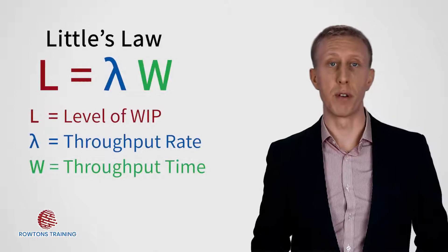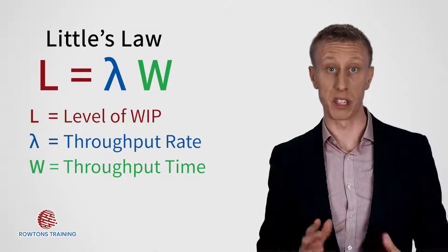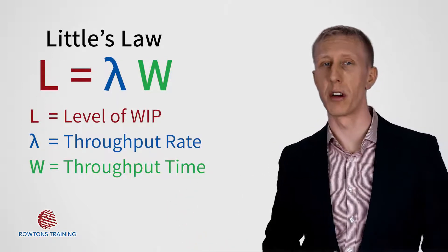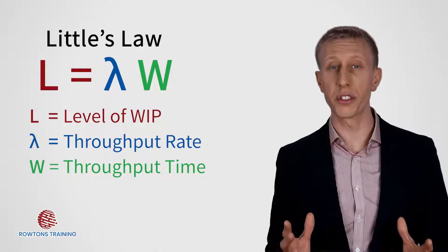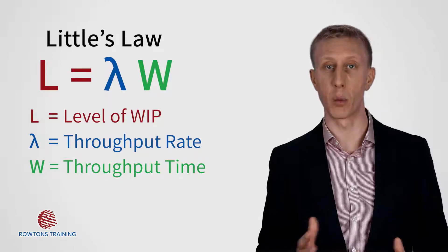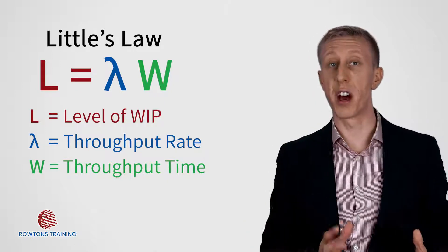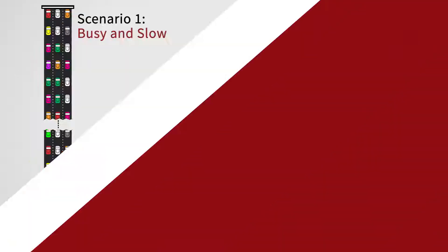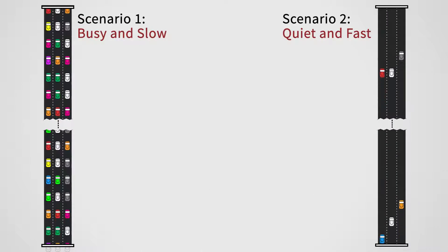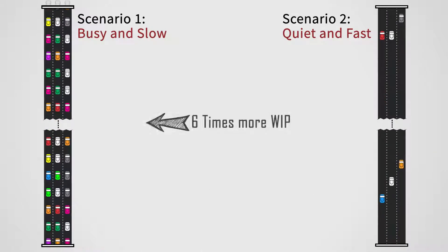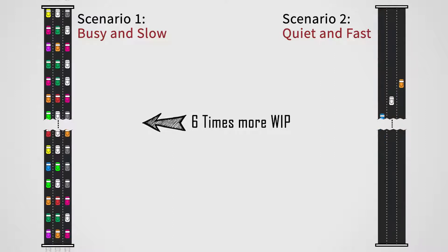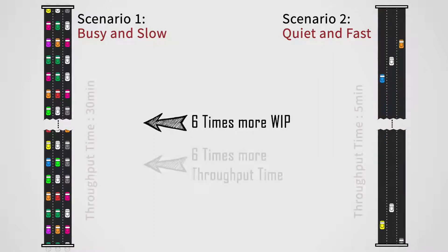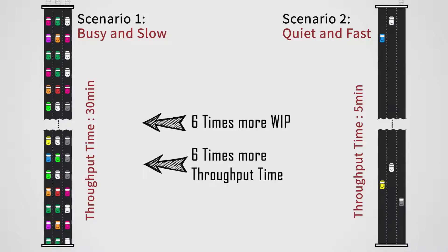If we keep the throughput rates the same, as was the case in our two toll road scenarios, we can see a direct relationship between the quantity of work in progress, the WIP, and the throughput time, or the lead time. On our toll road, when they were going slow, there were six times more cars on the toll road, WIP, six times more WIP, and the throughput time was six times longer.